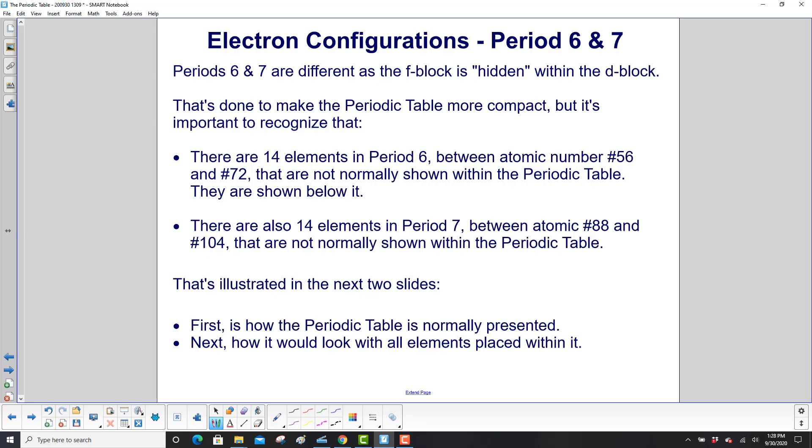Periods 6 and 7 in the periodic table are different, as the f block, because we're going to start filling those shells, is hidden within the d block. That's done to make the periodic table more compact. But it is very important to recognize that there are 14 elements in period six between atomic number 56 and 72. They are normally not shown within the periodic table. They are shown below it. There are also 14 elements in period seven between atomic number 88 and 104 that are normally not shown within the periodic table.